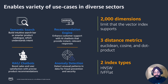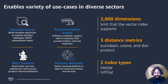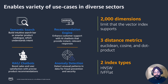Vector search supports 2,000 dimensions for the index. We provide all three distance metrics: Euclidean, cosine, or dot product — you as the user have the option to choose. Right now we support two index types: HNSW, the most performant and the default index, and IVF flat, which is very useful in POCs because the index build time is quite low.